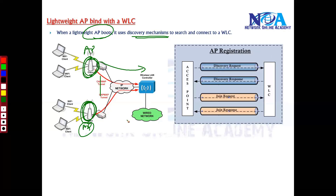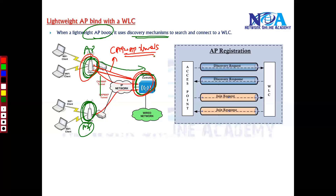Once the access point discovers the WLC, it is going to bind itself with it. The WLC and access point are then going to build something called CAPWAP tunnels, which are used to encapsulate and forward traffic. We'll talk more about CAPWAP tunnels in the next video.